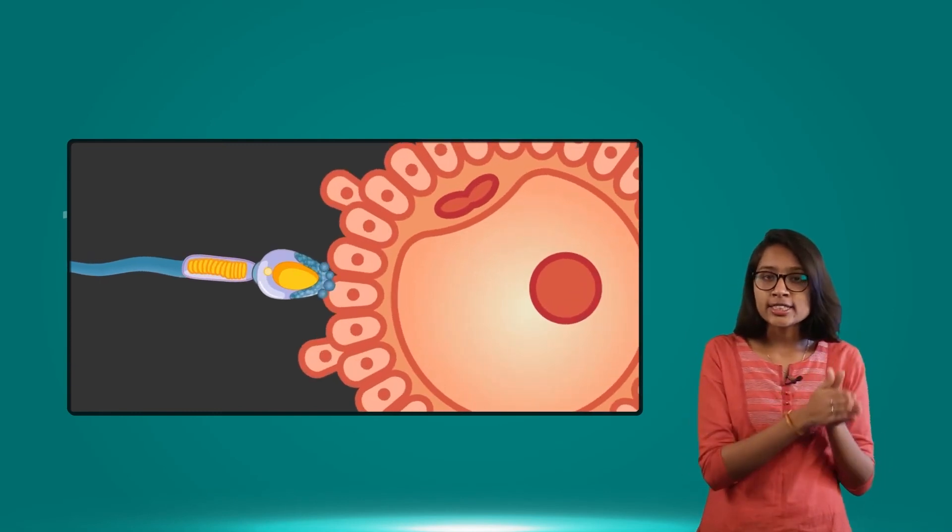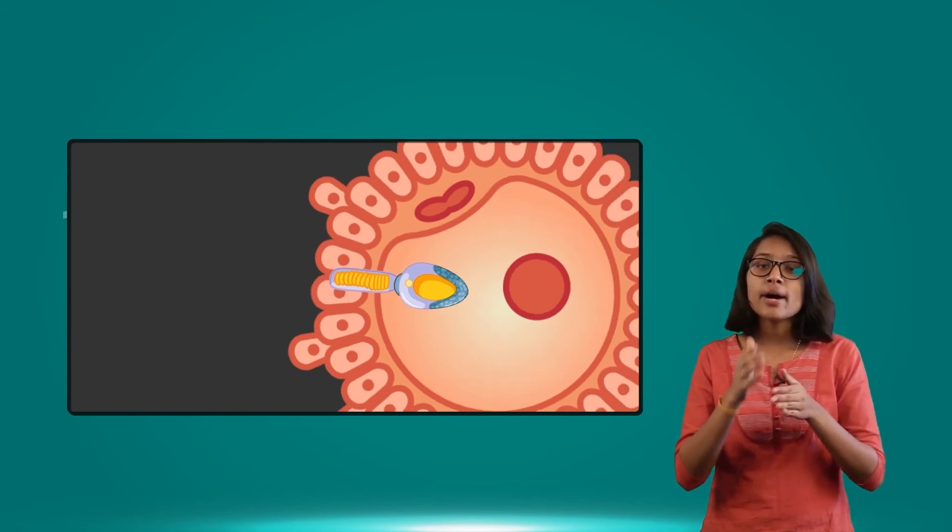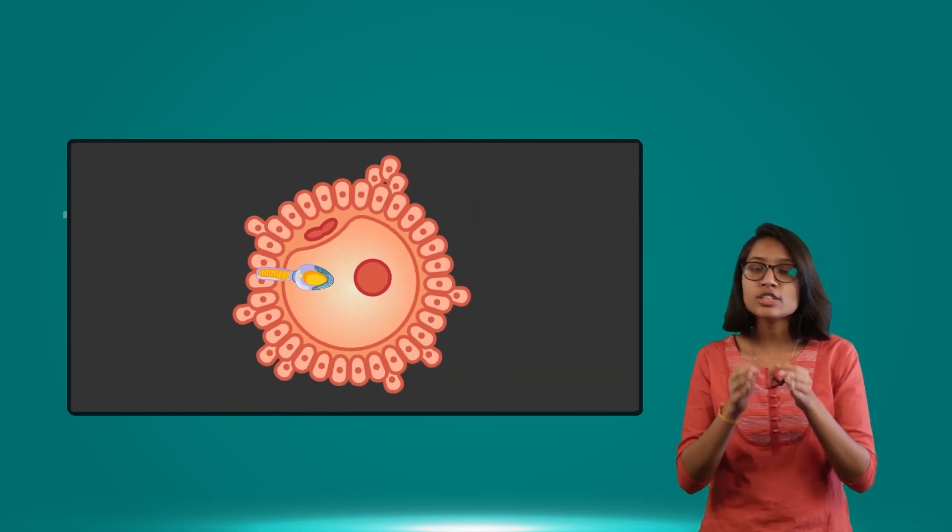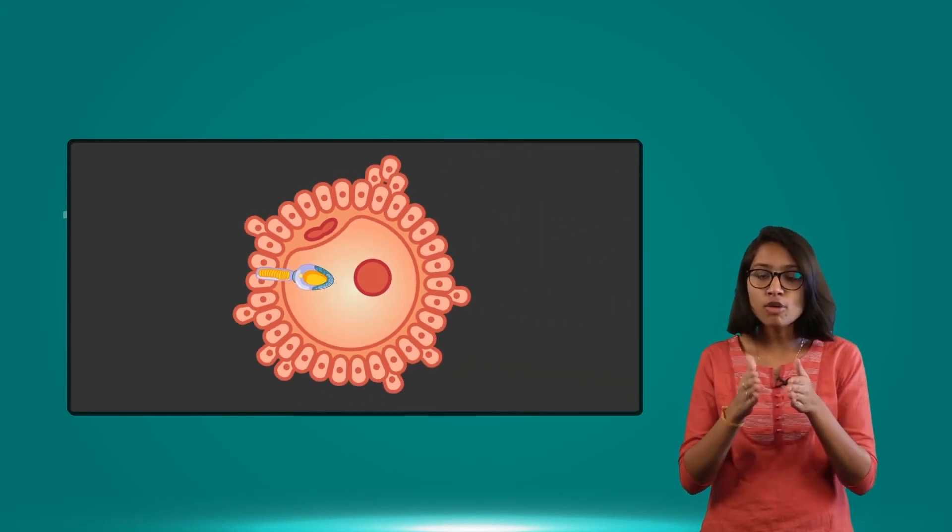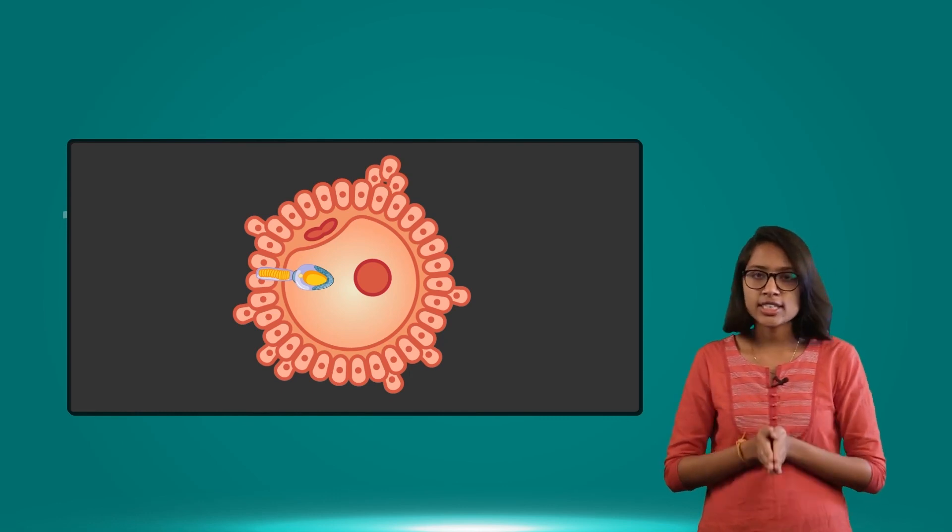We use these enzymes which help the sperm enter the ovum directly by diluting or digesting these two layers. Now we have free entry, so the sperm can enter directly into the ovum and complete fertilization.